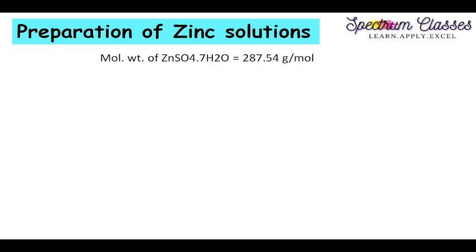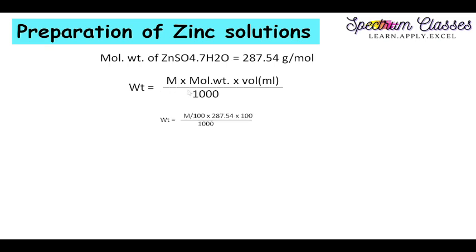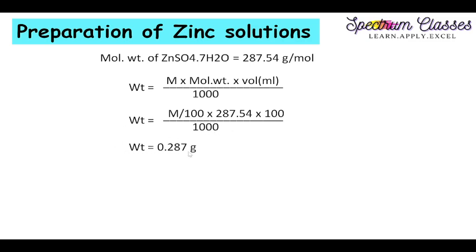Next is the preparation of zinc sulfate solution. The zinc sulfate I am using is zinc sulfate heptahydrate, with a molecular weight of 287.54 grams per mole. I again use the same formula to calculate the required weight. For M/100 zinc sulfate, using the molecular weight and a volume of 100 ml (converted to liters by dividing by 1000), I calculate the weight required to dissolve in 100 ml.